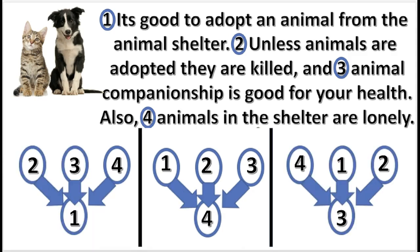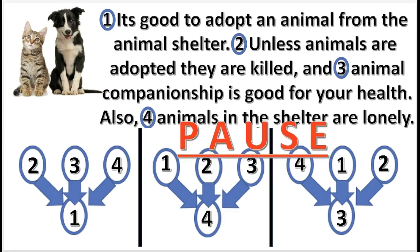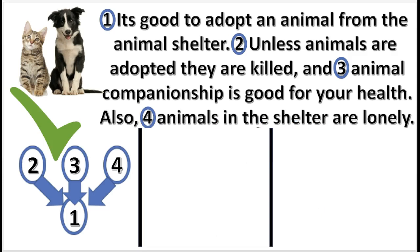Next, choose the correct sequence of numbers in the argument. Press pause — the answer is in 3, 2, 1. Ding! That is correct. 2, 3, and 4 support 1 independently.